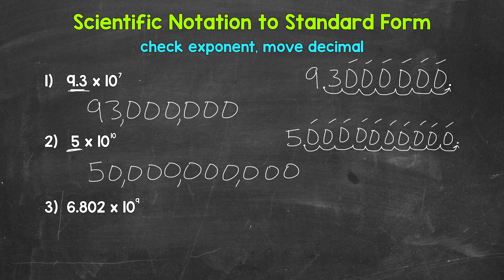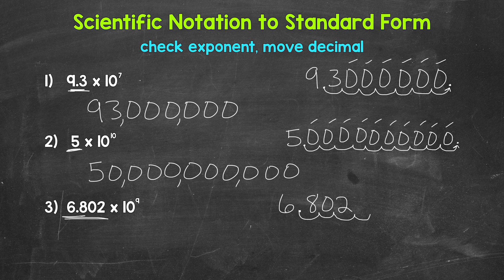Lastly, let's move on to number 3, where we have 6.802 times 10 to the 9th power. Let's write 6.802 off to the side. Looking at the exponent, we have a 9, a positive 9. So we're working with a large number here. We need to move the decimal 9 places to the right: 1, 2, 3, 4, 5, 6, 7, 8, 9. And fill with zeros here.